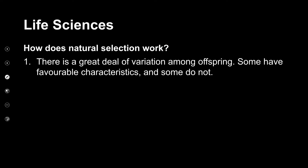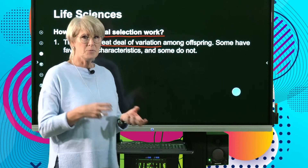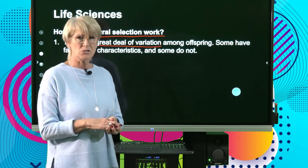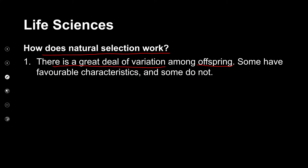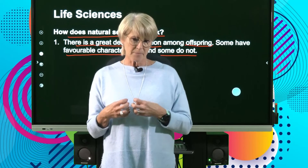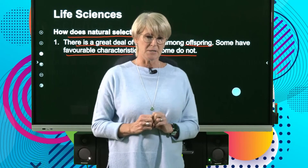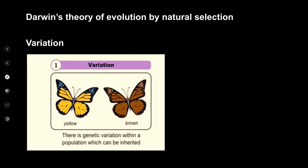Let's look at each point in detail. How does natural selection work? Initially there is a great deal of variation — lots of different forms or varieties in the offspring, they don't all look exactly the same. Sexual reproduction in these organisms creates a lot of genetic variation. Some offspring have a favorable characteristic and some do not, depending on the environmental conditions.